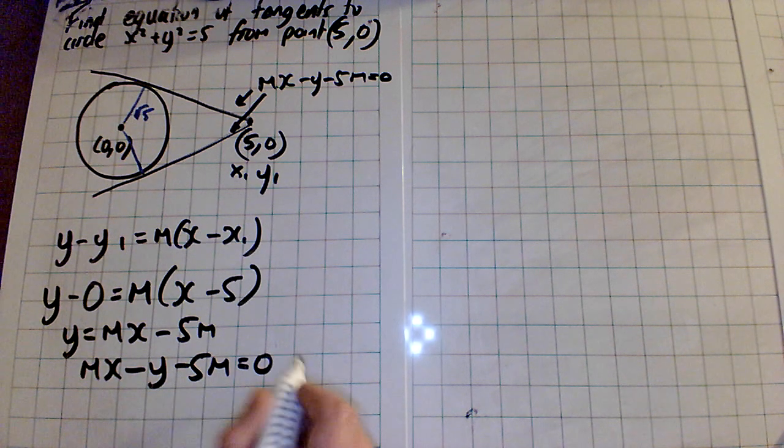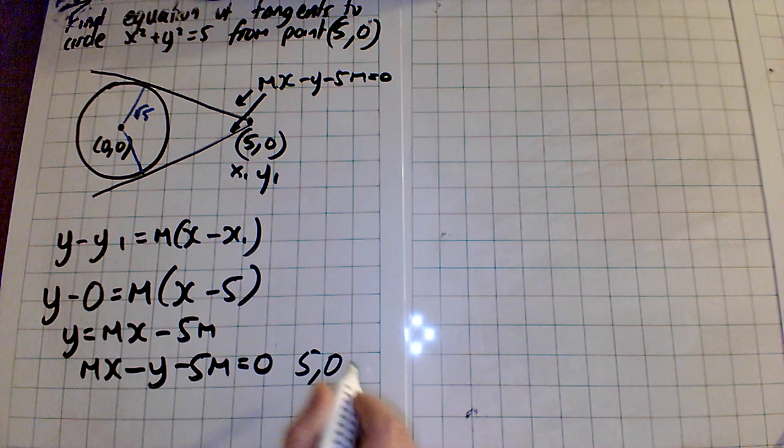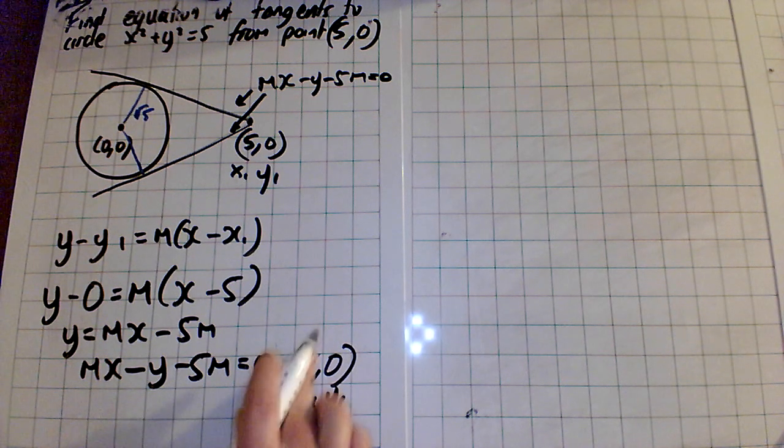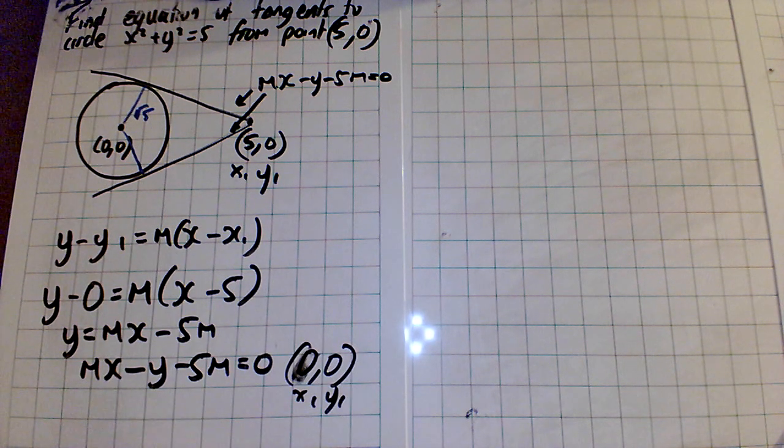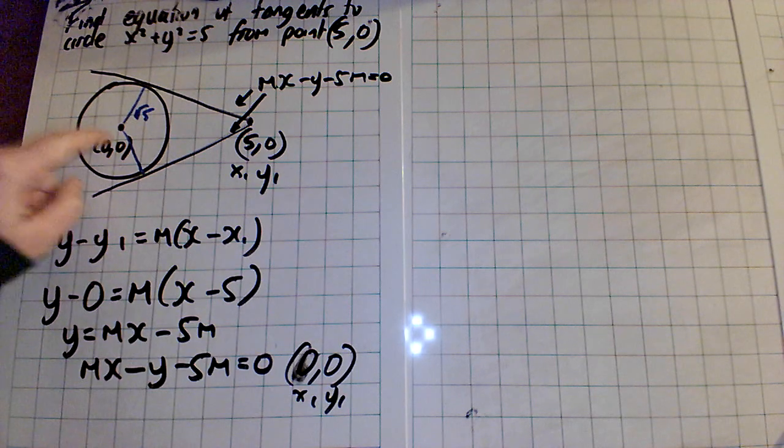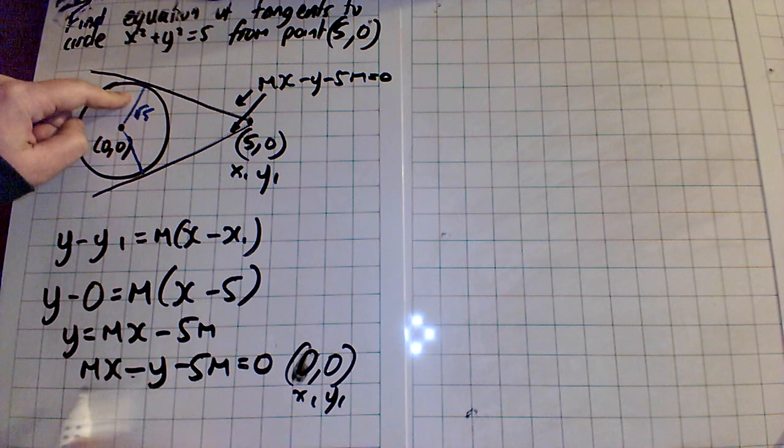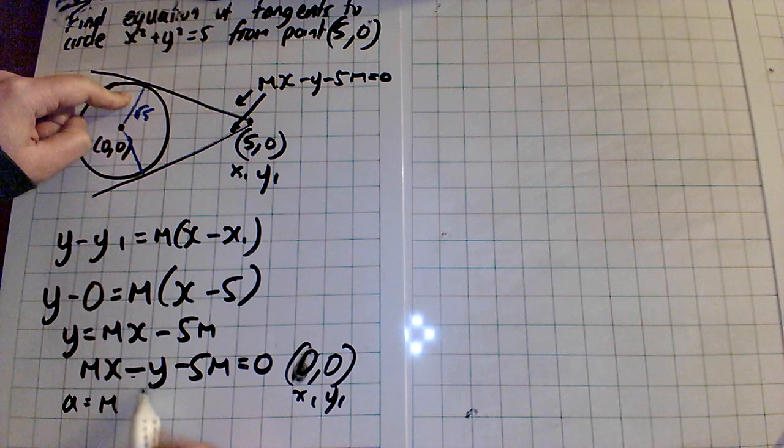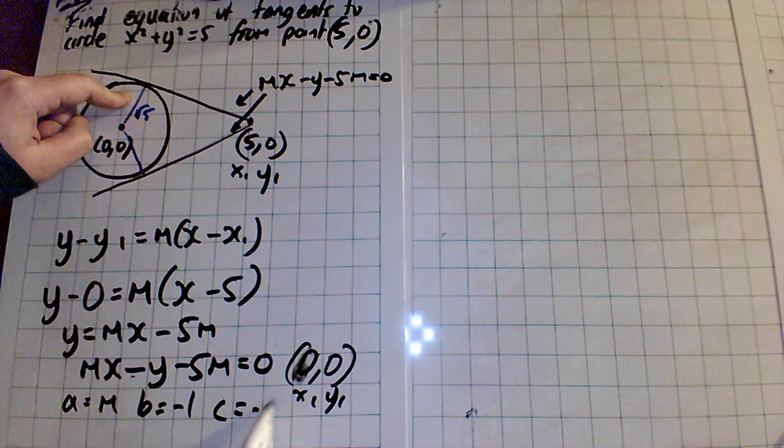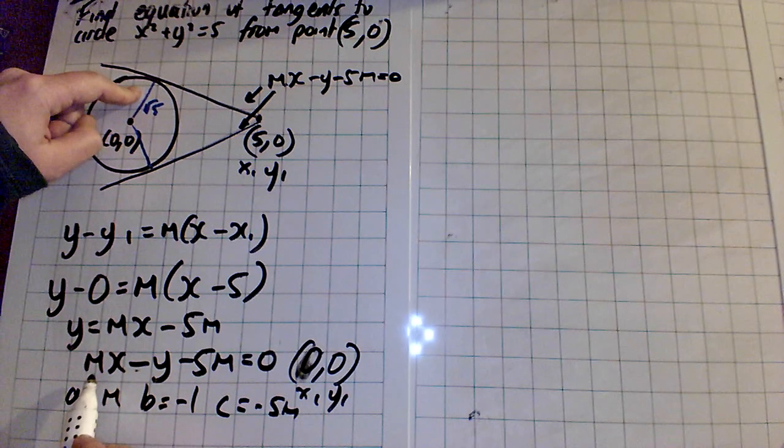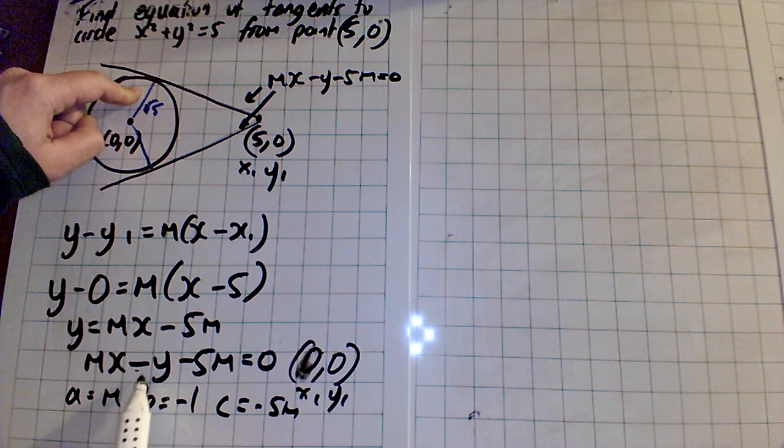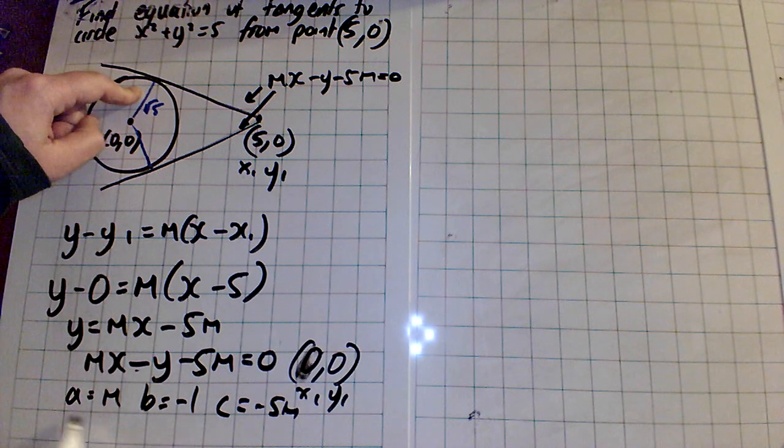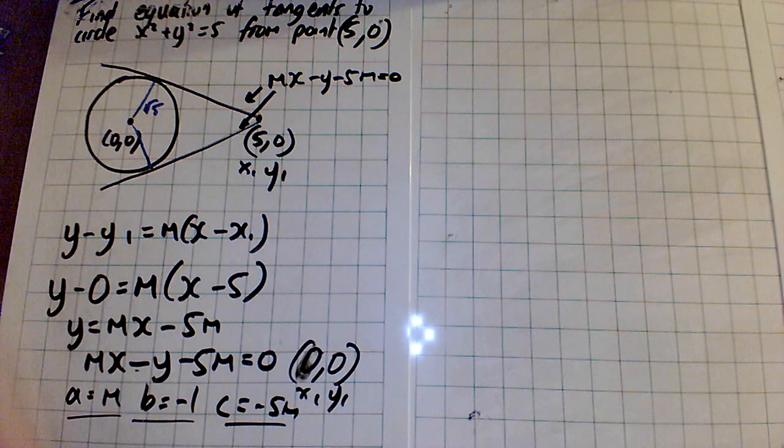So what we do is, the point is (5,0), that's x₁, y₁. Or sorry, the point isn't (5,0), because we're going from now (0,0), so (0,0). The distance from that point to this line, and we know that this line is here, so we say a is m, b is minus 1, and c is minus 5m. Remember, a is the number before the x, the coefficient of x. b is the coefficient of y, and c is the other term. So we have those three pieces of information, and we have x₁ and y₁.